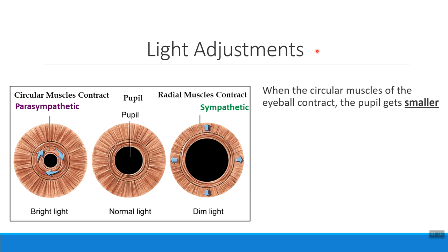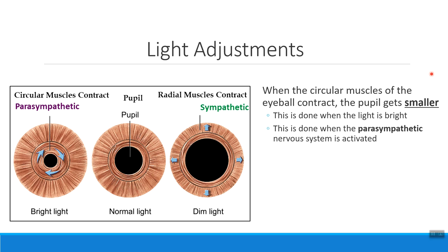Inside the iris there are two layers of muscle. We have what are called the circular muscles that frame around the pupil, and we also have what are called the radial muscles, which are more on the outside of that circle. These two sets of muscles do two very different things. When the innermost circular muscles contract, the size of the pupil — the opening of your eyeball — actually gets smaller.